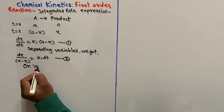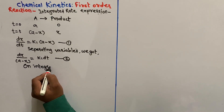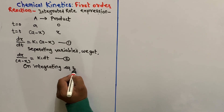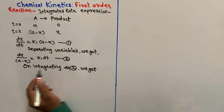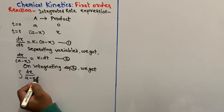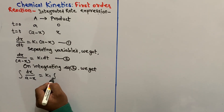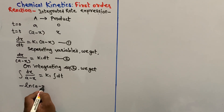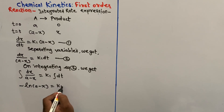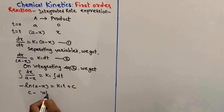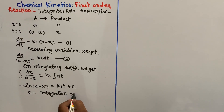On integrating equation number 2, we get the integration of dx upon (A minus x) is equal to k1 into the integration of dt. So that comes to: minus log of (A minus x) is equal to k1·t plus c, where c is the integration constant.